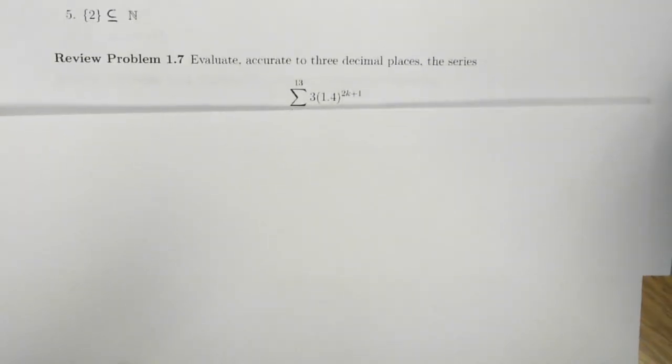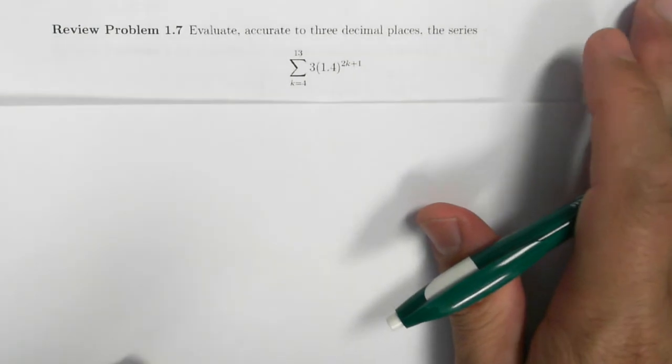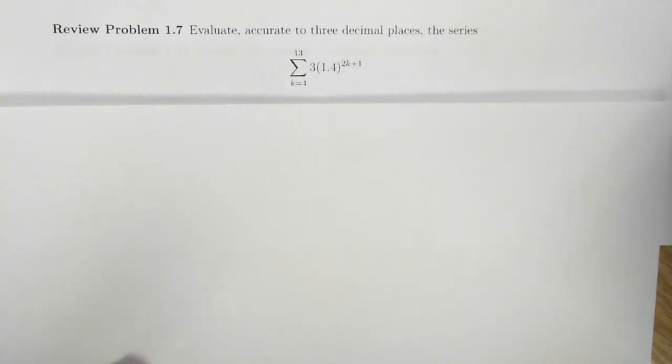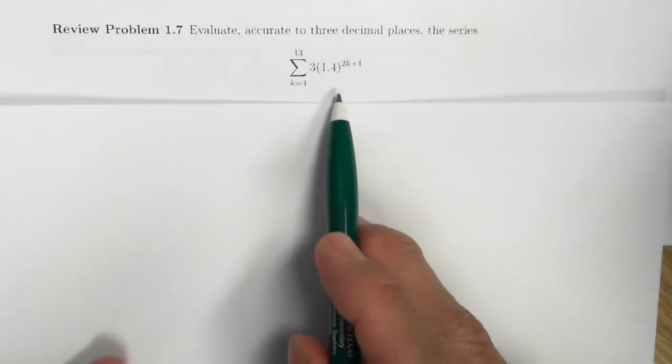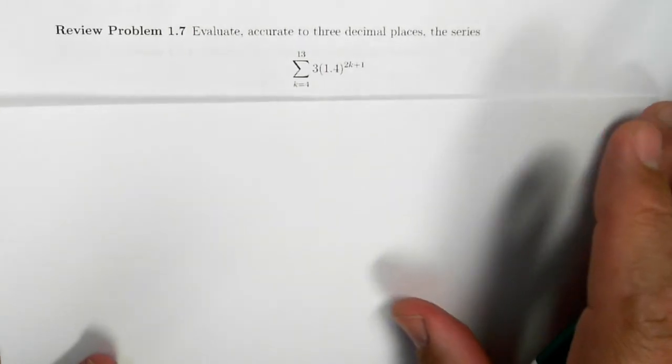In review of problem 1.7, we are asked to look at this series, summation k equals 4 to 13, of 3 times 1.4 to the 2k plus 1, and evaluate it accurately to three decimal places.